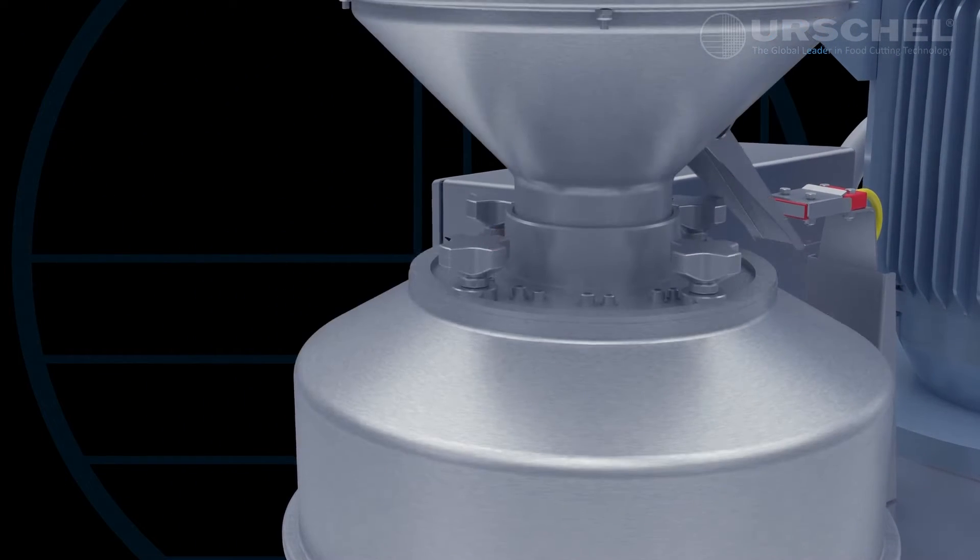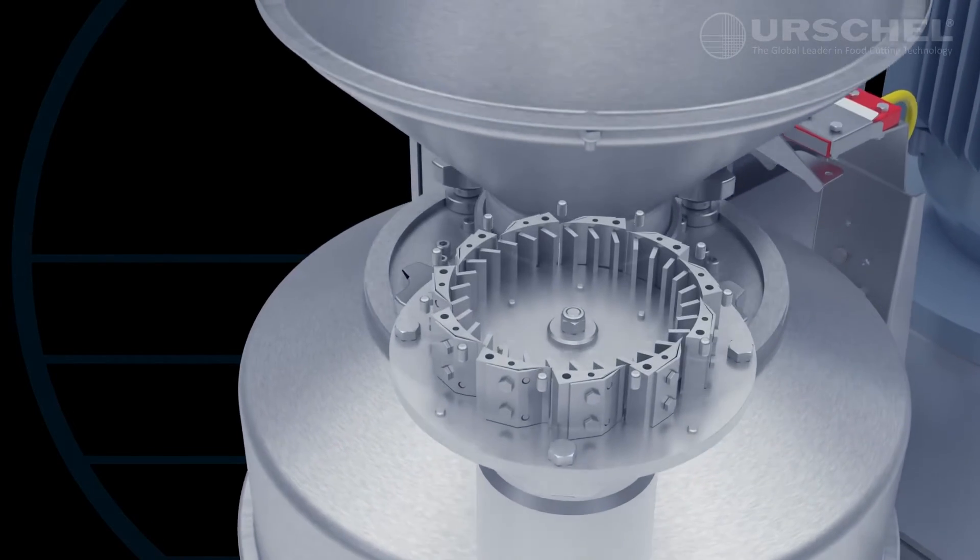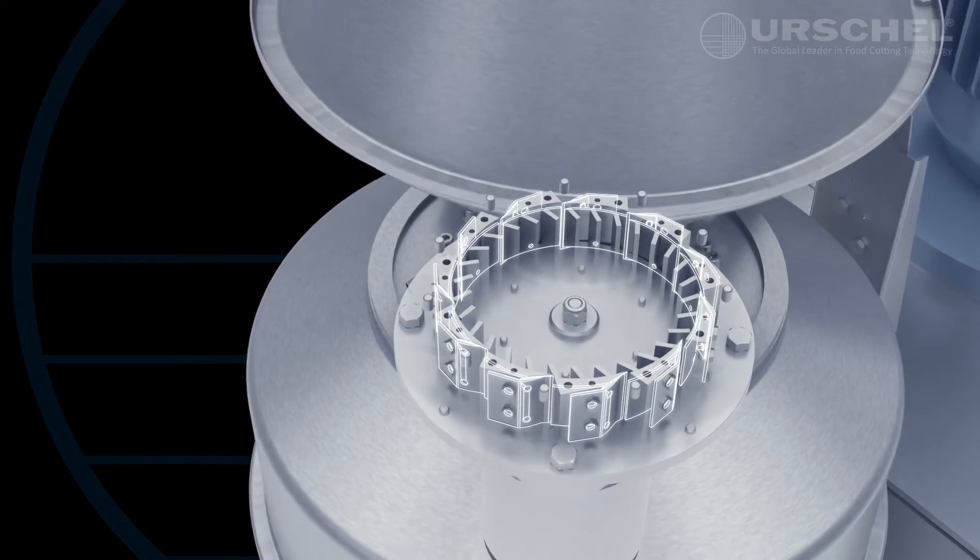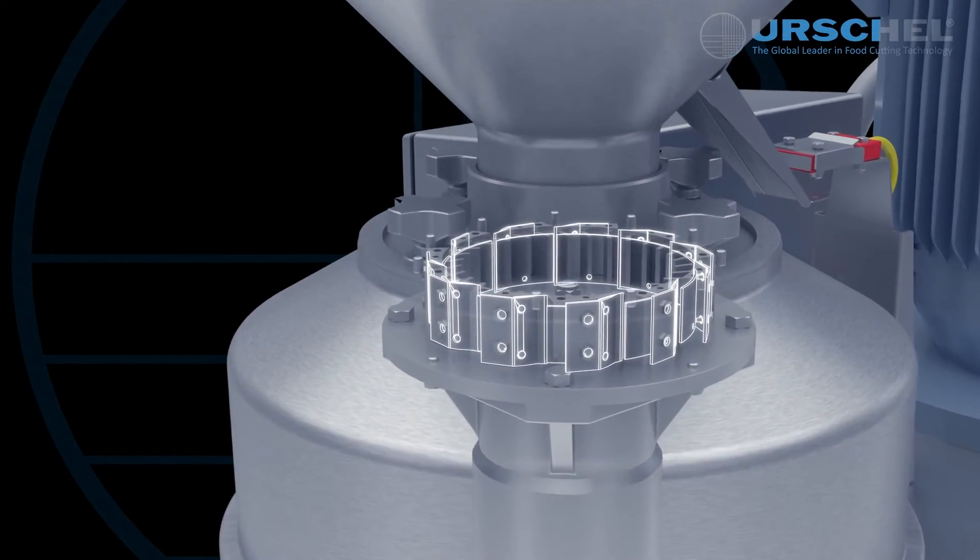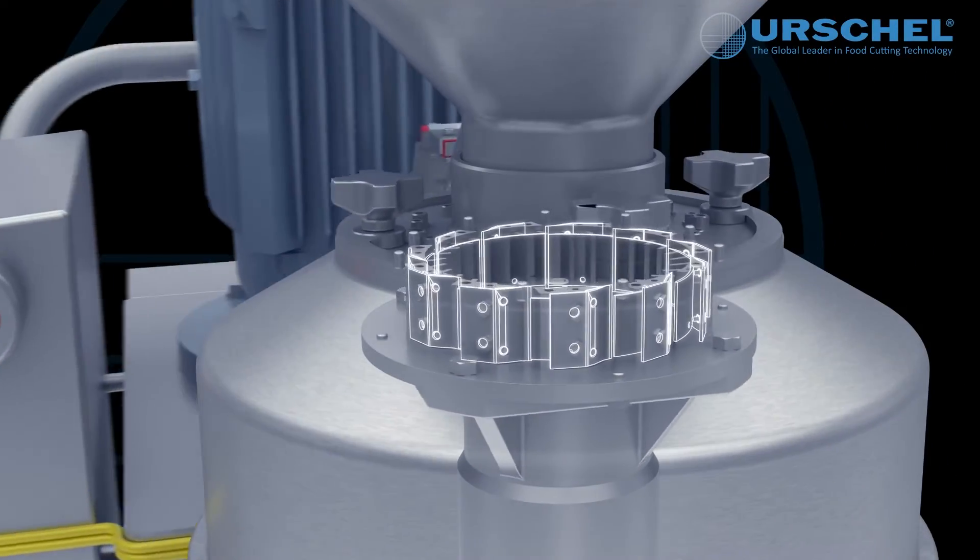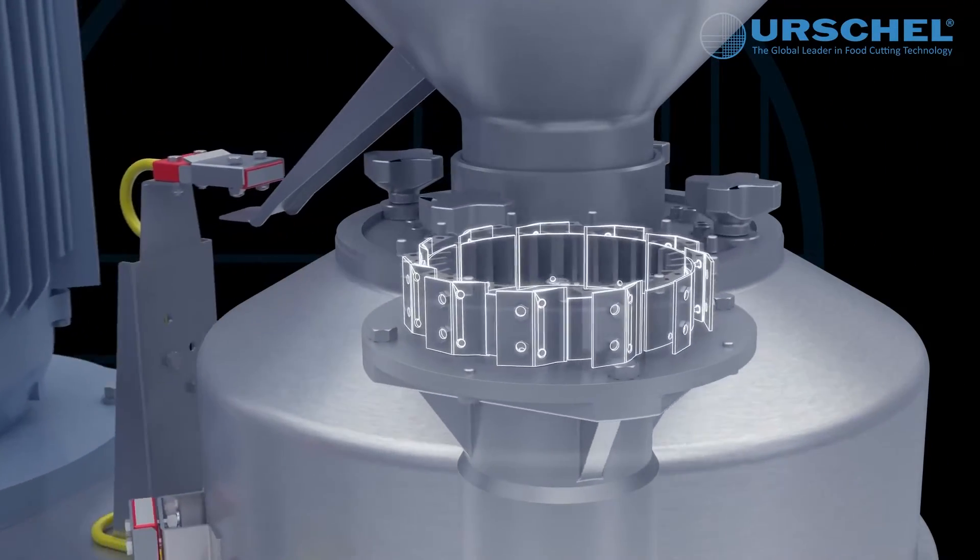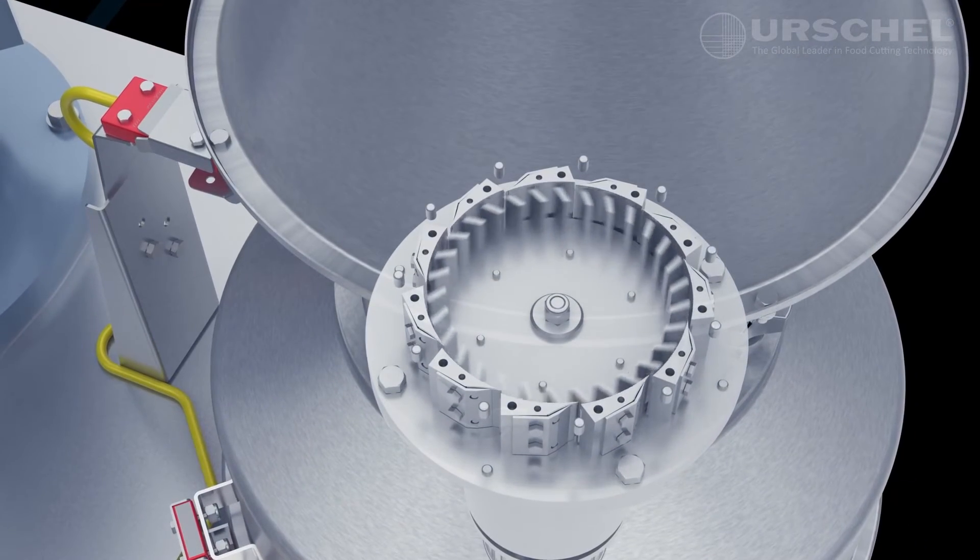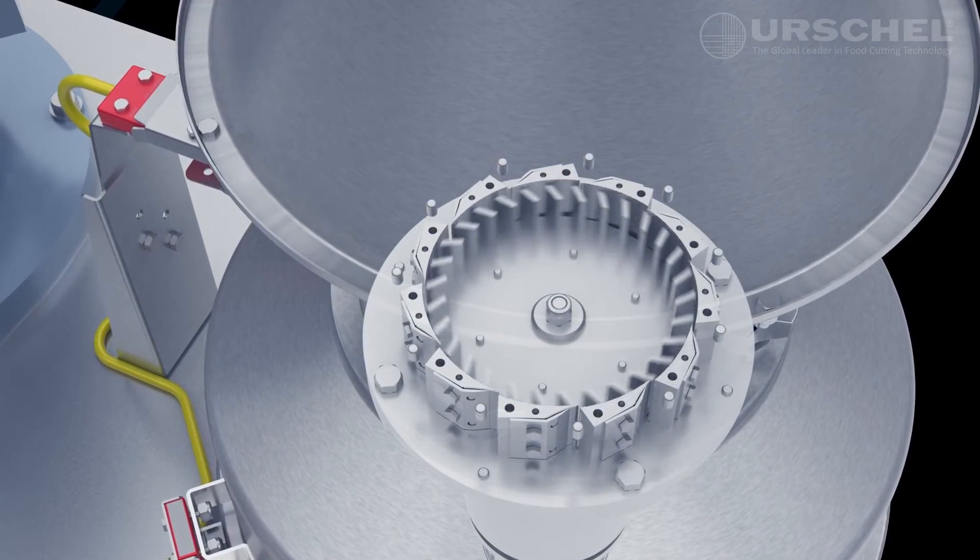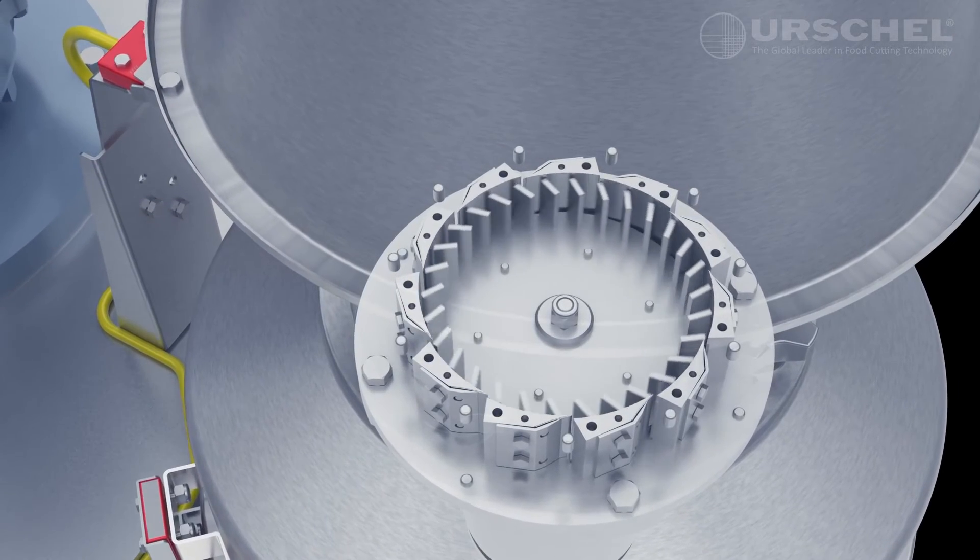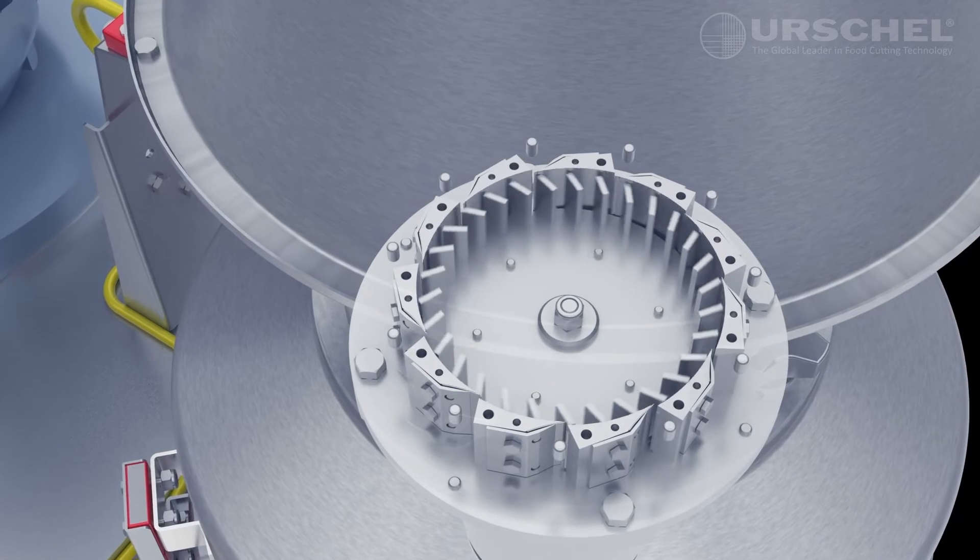The final style of reduction head available on the model 1700 is the slicing head. This head is a precise miniaturized version of other centrifugal slicers. It consists of a ring of 11 stationary slicing knives held in place by adjustable knife holders. Centrifugal force created by the rotating impeller causes the product to press firmly against the inner surface of the knife holders to produce uniform slices at each knife location.